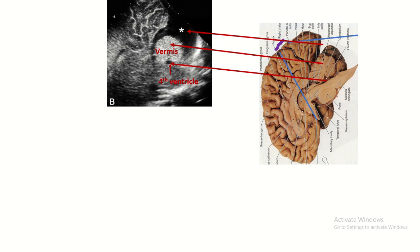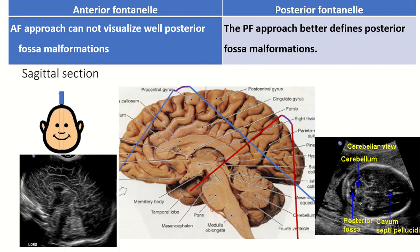This is the sonography picture through the posterior fontanelle approach. Here you can see the occipital lobe of the cerebrum, the cisterna magna, the vermis, the fourth ventricle, the pons, and the medulla oblongata. The anterior fontanelle approach cannot visualize posterior fossa malformations well; these are clearly visualized through the posterior fontanelle approach.